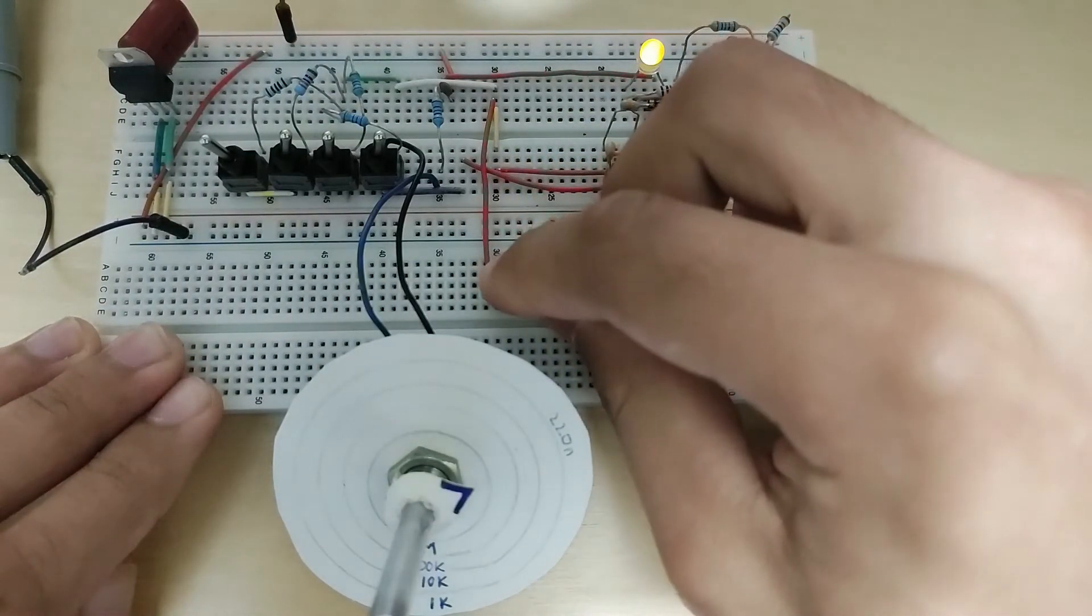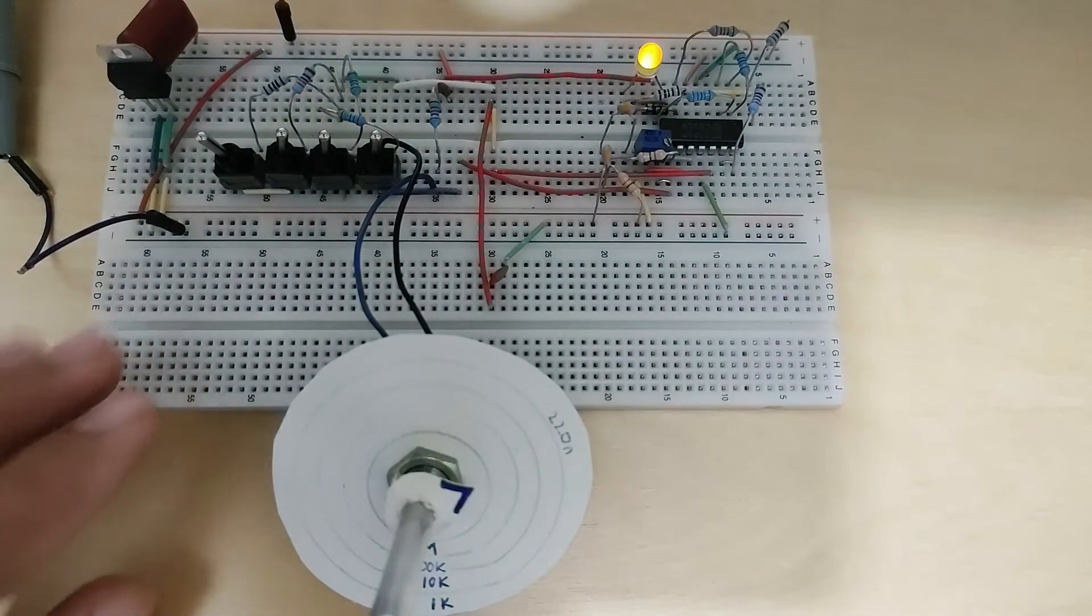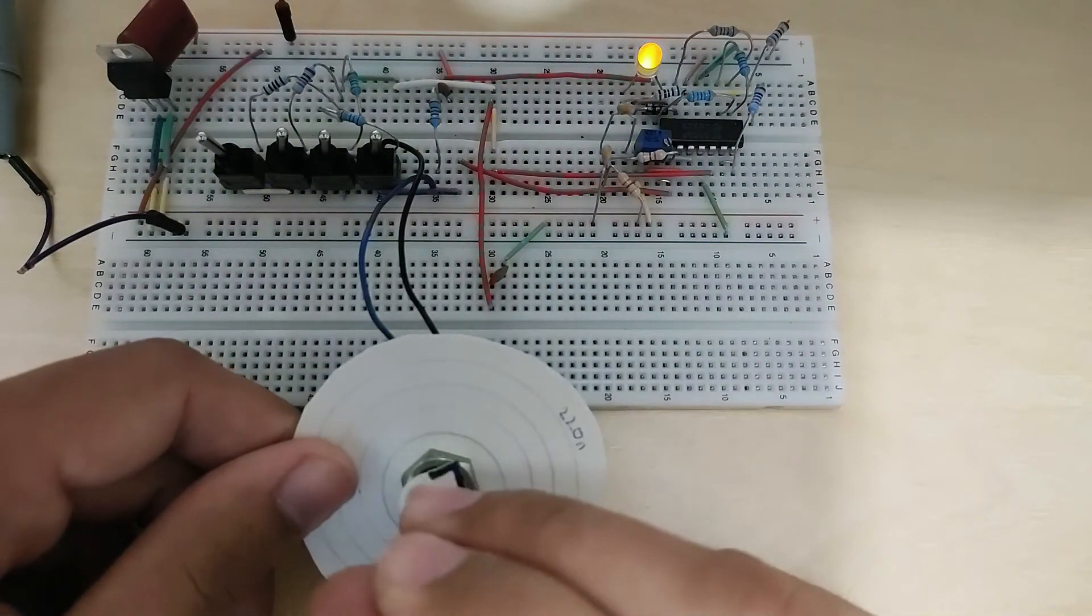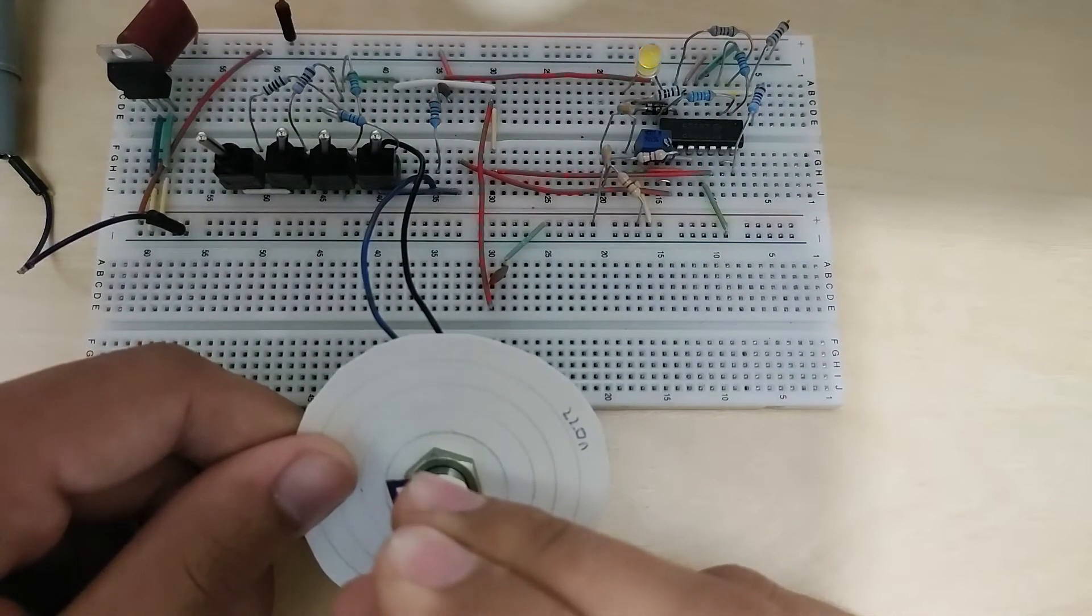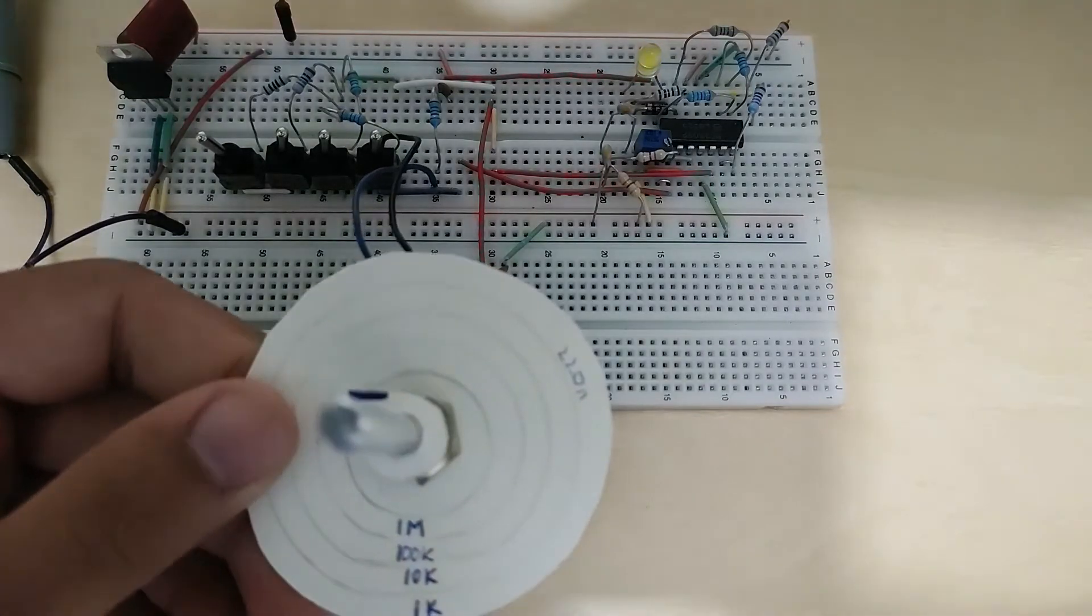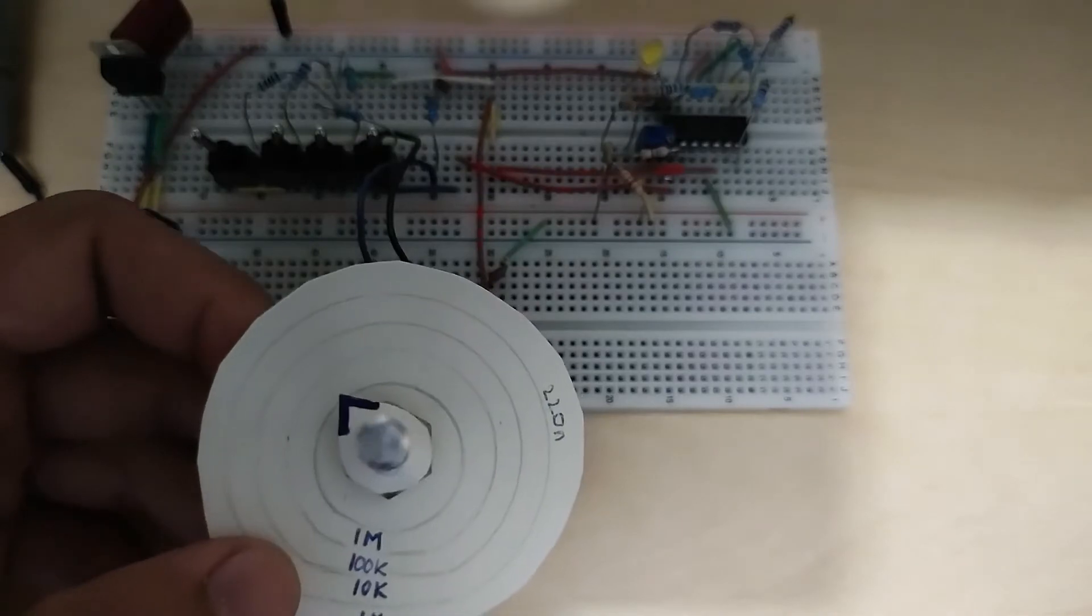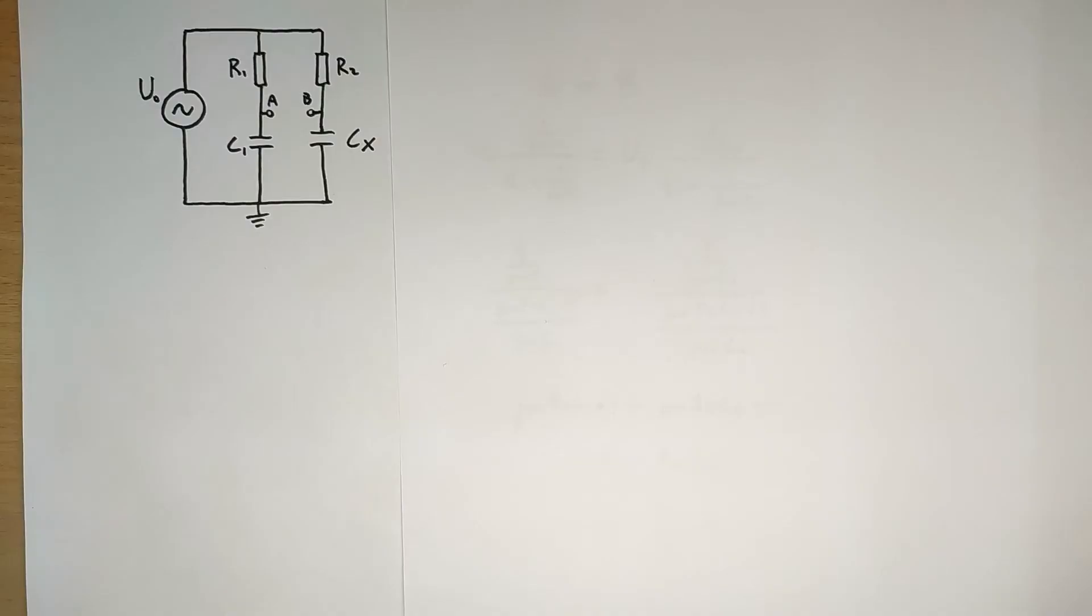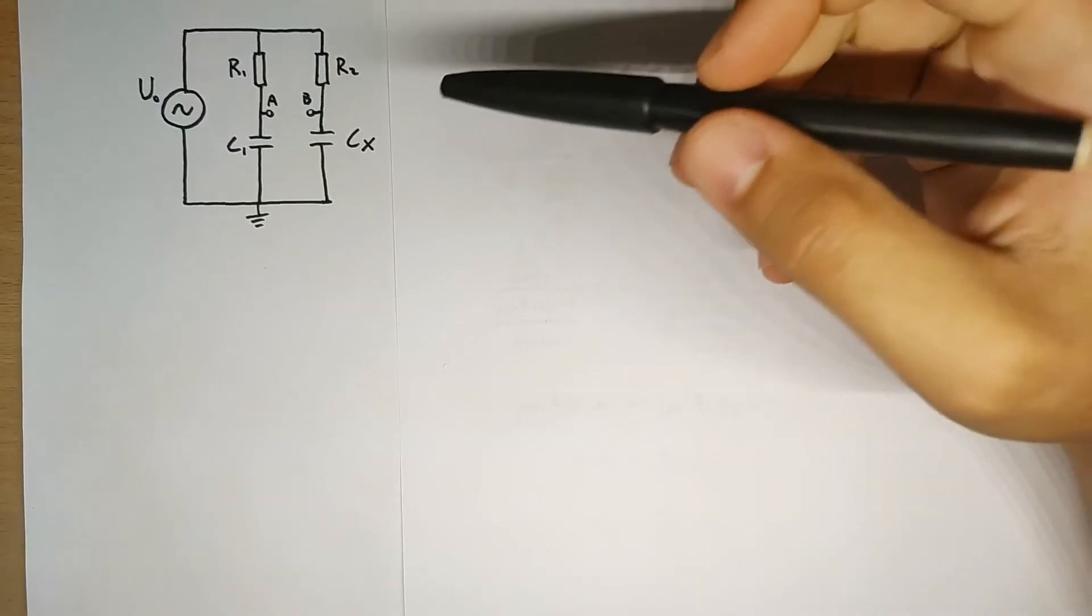Okay, so the way this thing is gonna work is we'll insert a capacitor, then we'll try flicking one of the four switches and we'll turn the knob, and when we see the LED turn off then we can read the value of the capacitor on the appropriate line or circle on the knob.